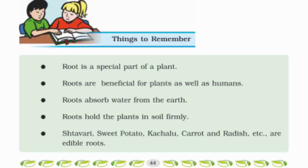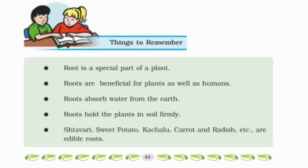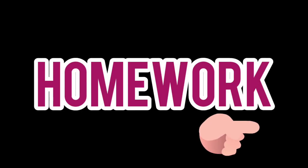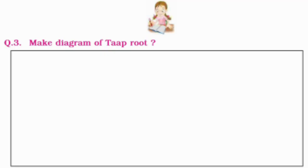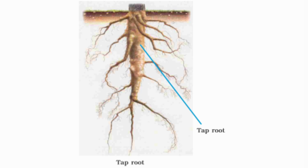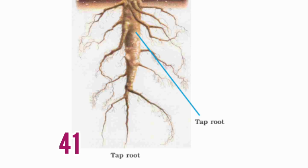So, children, I hope you have understood the things to remember carefully and you will learn them easily. Now, for your homework, children, do question number 3: make a diagram of taproot. For this, you can get help from the diagram of taproot drawn at page number 41.